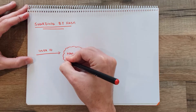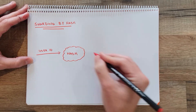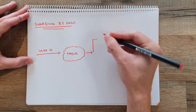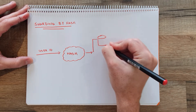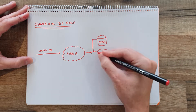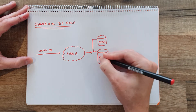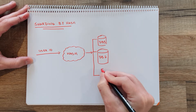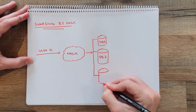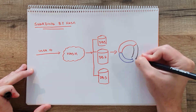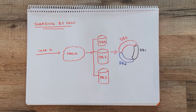For example, let's say we have a user ID — we hash it, and depending on the hash, we store it in one bucket or another. In this case, the buckets are the database servers where the data would be stored. You can also scale this further by using consistent hashing, but that's a topic for another video.